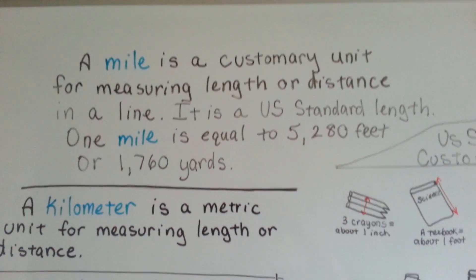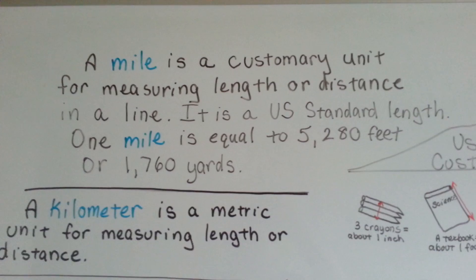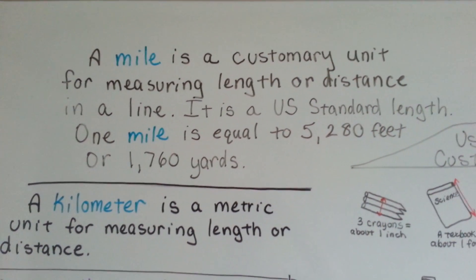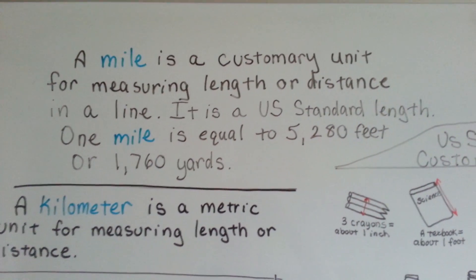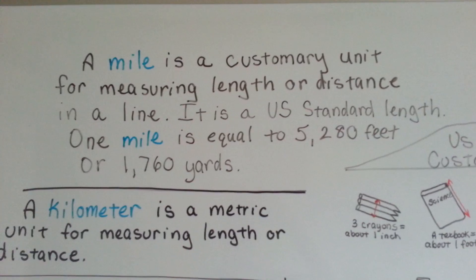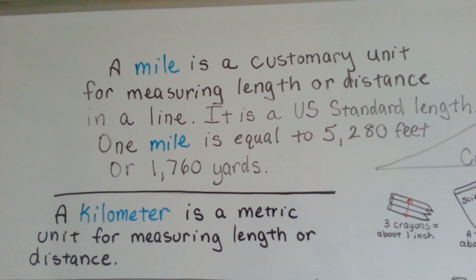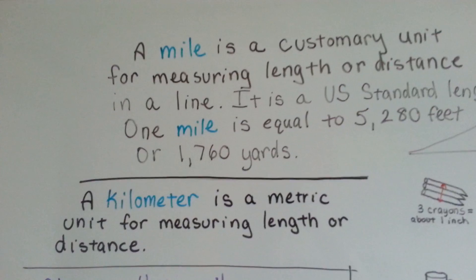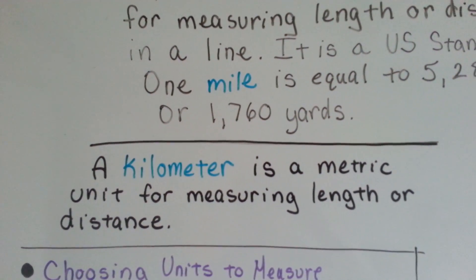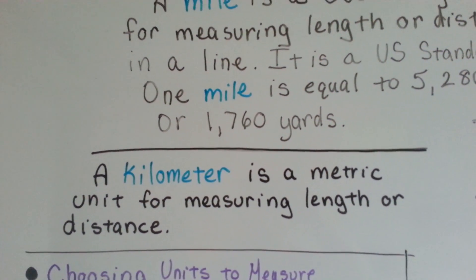So a mile is a customary unit for measuring length or distance in a line. It's a U.S. standard length. One mile is equal to 5,280 feet or 1,760 yards. A kilometer is a metric unit for measuring length or distance.